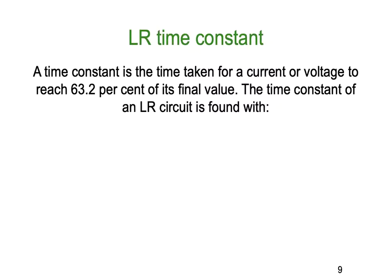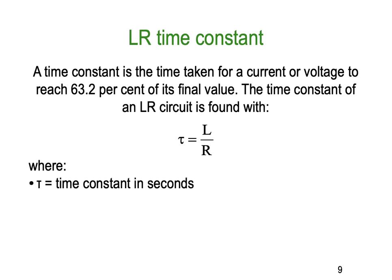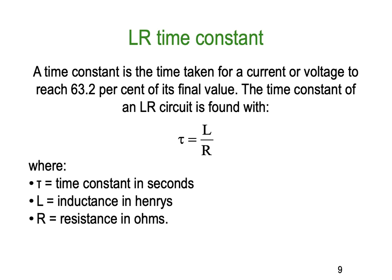The RL time constant is the time taken for a current or voltage to reach 63 percent of its final value in one direction. The time constant of an RL circuit is found with the formula: tau (τ) equals L divided by R — the inductance divided by the resistance. Here, τ is the time constant, L is inductance in henrys, and R is resistance in ohms.